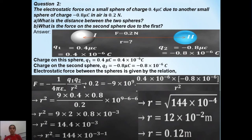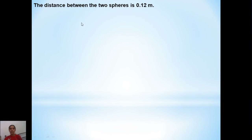You should remember this method whenever you need to find the distance between any two charged bodies or spheres. Use Coulomb's law, shift the force term to the right side so r squared goes to the left, and simplify in the same manner. The distance between the two spheres is 0.12 meter.